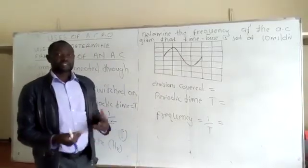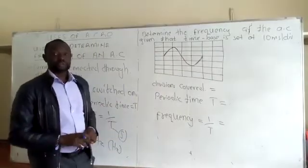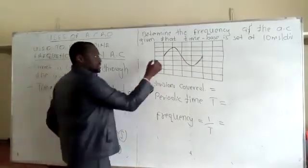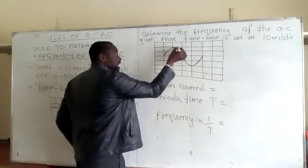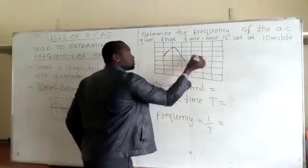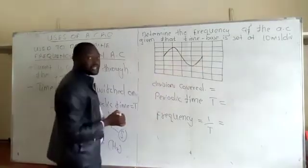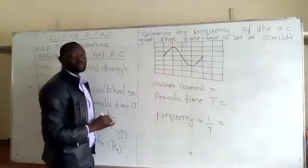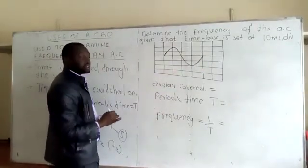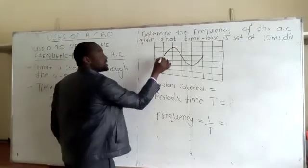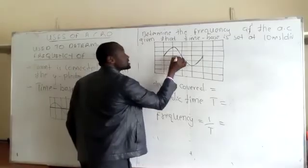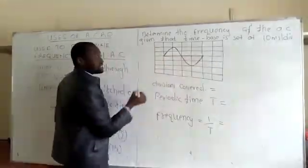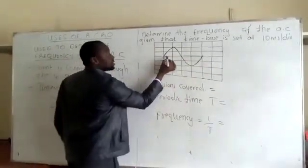The first thing we need to check is: do we have one complete oscillation? Yes, it is there — we have one complete wave. How many divisions has it covered? It has covered one, two, three...